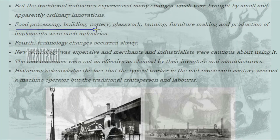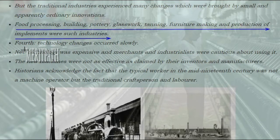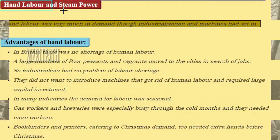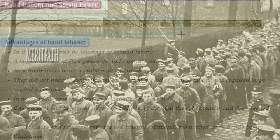Food processing, building, pottery, glasswork, tanning, furniture making and production of implements were examples of such industries. The fourth reason was that technology changes occurred slowly — new technology was expensive and merchants and industrialists were cautious about using it. New machines were not as effective as claimed by inventors and manufacturers. Historians acknowledge that the typical worker in the mid-19th century was not a machine operator but a traditional craftsperson and laborer. With the expansion of railways and rail rolling, hand labor was very much in demand even though industrialization and machines had set in.